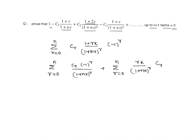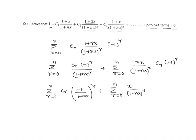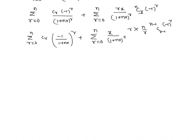So we have sigma from r=0 to n of Cr times (-1/(1+nx))^r, plus sigma from r=0 to n of x divided by (1+nx)^r times r times Cr times (-1)^r. Here, nCr can be written as (n/r) times (n-1)C(r-1). So sigma from r=0 to n of Cr times (-1/(1+nx))^r can be written as (1 - 1/(1+nx))^n.